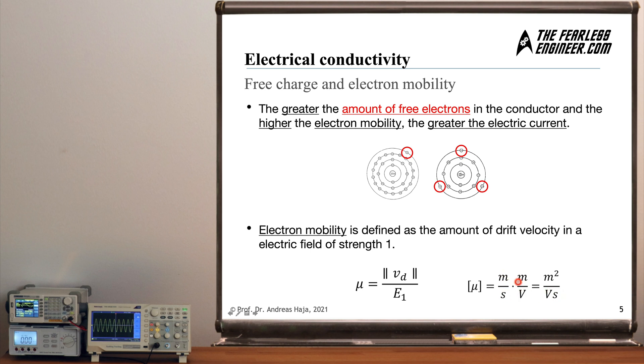And the unit of the electron mobility is square meters per volt second. And here you can see where this expression comes from. So meters per second, this is clearly the drift velocity. And volts per meter, this is the unit of the electric field, which is now inverse because it's in the denominator. And in summary, we get square meters divided by voltage seconds. That's the unit of the electron mobility. And from the units here, it becomes clear that this is the definition behind electron mobility.